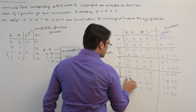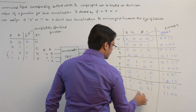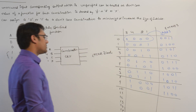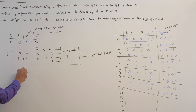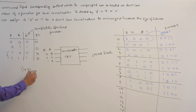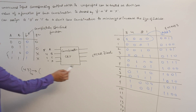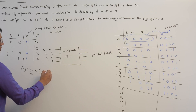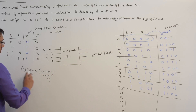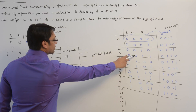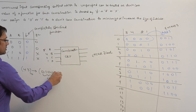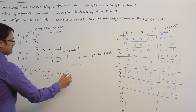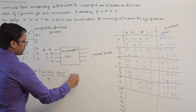The 8421 code and the XS3 code are both used to represent numbers. For example, if you have a decimal number 43, then digit 4 can be represented in 8421 code as 0100, and digit 3 as 0011.